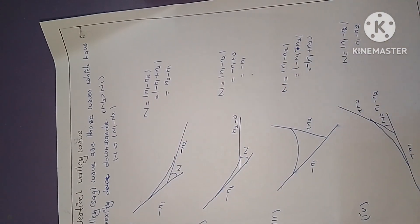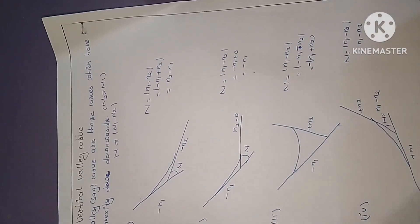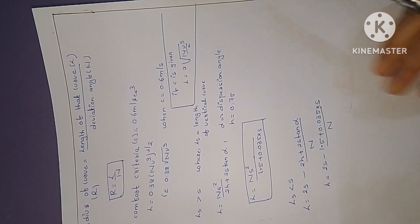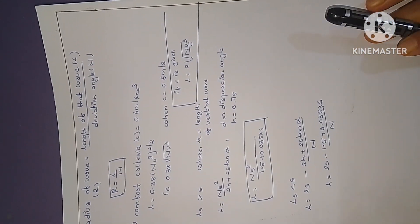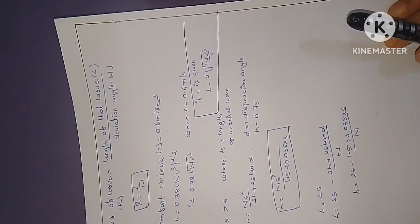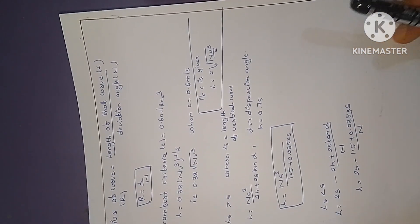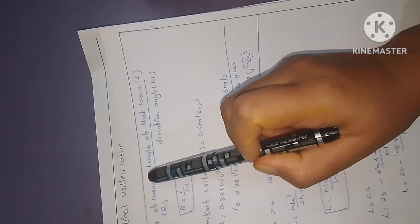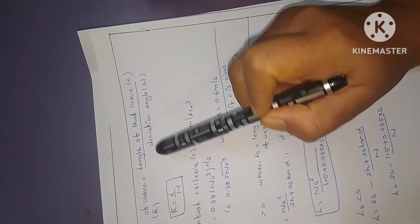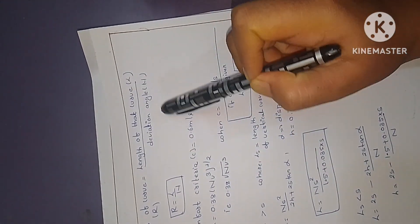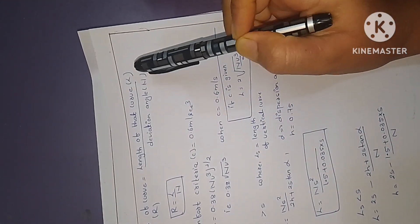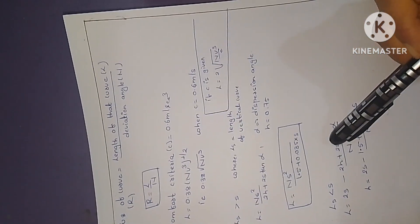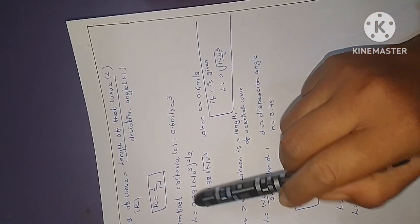Now we have the formula for the belly curve. The radius of the curve is the length of the curve divided by the deviation angle: R equals L by N. This formula can be referenced from the standard formula sheet.